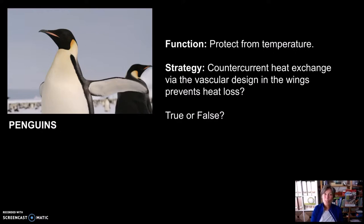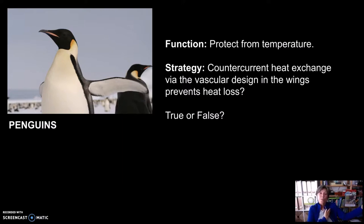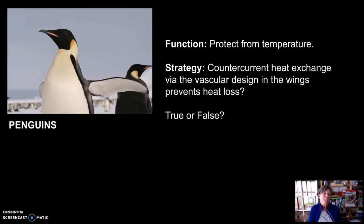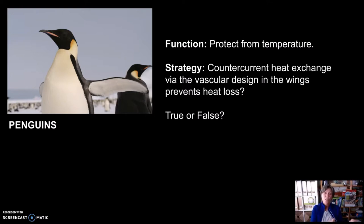Let's look at another organism that protects itself from temperature, but this time from extreme cold temperatures. The wings of a penguin reduce heat loss by forming a counter-current heat exchange through its blood vessels between the wings and the body core. The cold blood returning to the body is heated back up by this vascular exchange of heat. The heat is conserved and returned to the body core instead of traveling further out onto the wings to be lost to the cold water. Does the penguin achieve the function 'protect from temperatures' by using the strategy of heat exchange via the vascular design between the wings and the body core to conserve warmth? True or false?